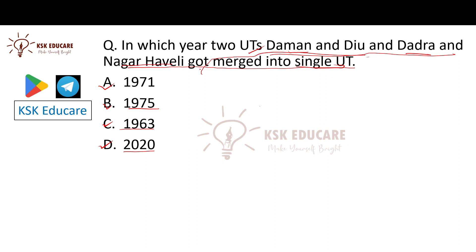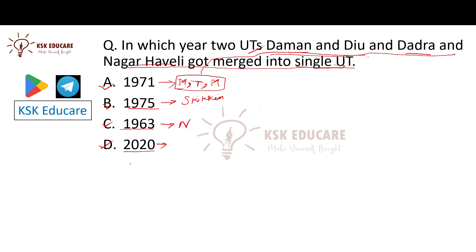The correct answer is Option D — 2020. In 1971, Manipur, Tripura, and Meghalaya were granted statehood. In 1975, Sikkim was added as a state. And in 2020, Daman and Diu and Dadra and Nagar Haveli were merged into a single union territory.